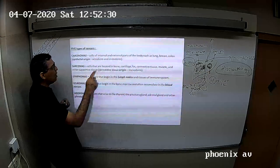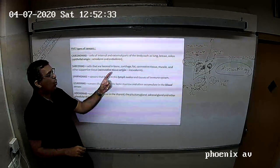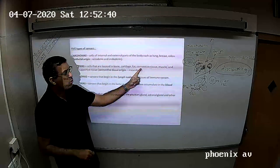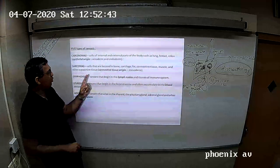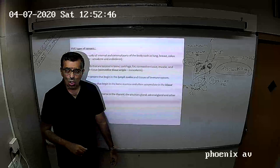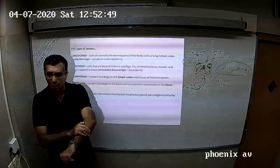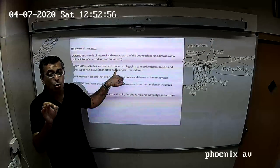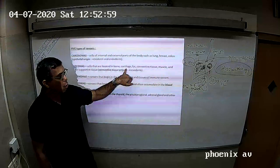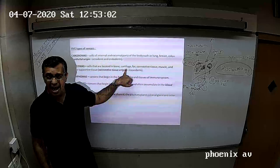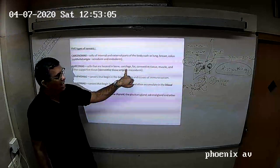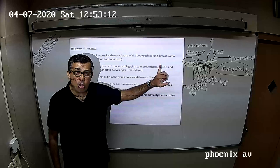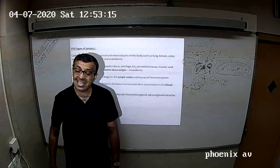Similarly, cancers of mesodermal origin are called sarcomas. They originate in bones. If you remember bones are mesodermal. Cartilages are mesodermal. Fat mesodermal. Connective tissue mesodermal. Muscles mesodermal. Other supportive tissues mesodermal. Bone cancer can be called as osteosarcoma. It's the sarcoma of the bone. Cartilage cancers are called as chondrosarcoma. Fat cancers are called liposarcoma. Muscle cancers are called myosarcoma. All these are called as sarcoma.